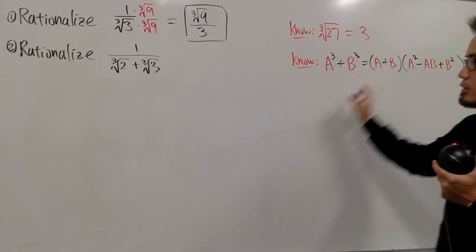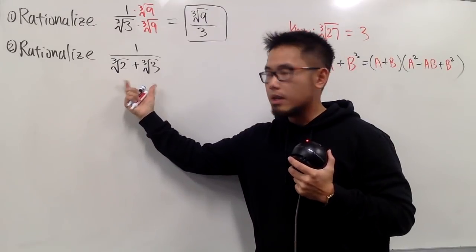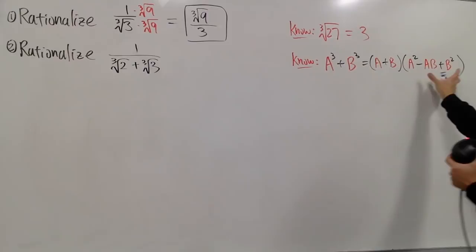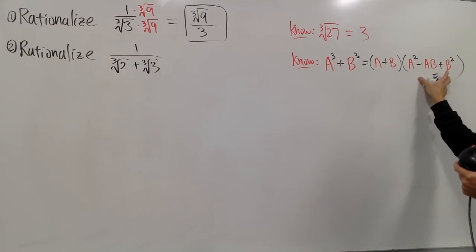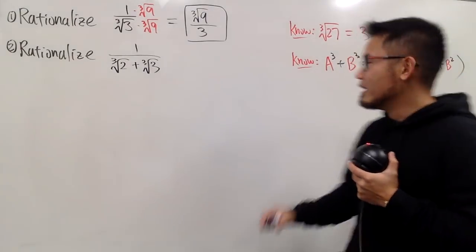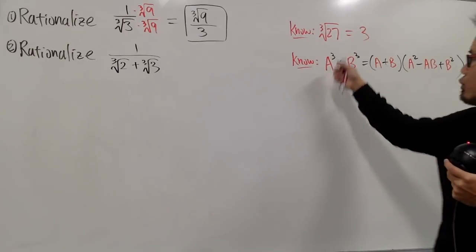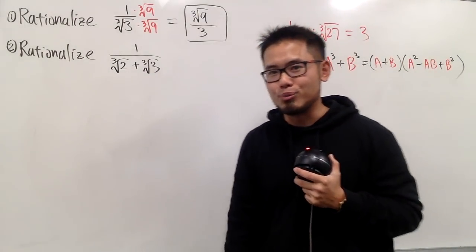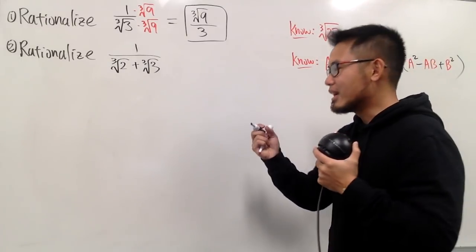And I have this term right here already. I will take this as the a, and this is my b. And now, I just have to multiply by this part, right? On the bottom and on the top. So, when I do that, I can produce a to the third power plus b to the third power, and then seriously, I can say bye-bye to the cube root. That would be so wonderful. And now, let's make that happen.